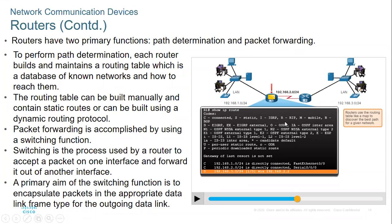The routing table contains initials for both dynamic and static routes. When you see a 'C', it means connected routes — for example, the networks directly connected to a router are connected routes. With respect to a different router, those same networks would be called remote routes.